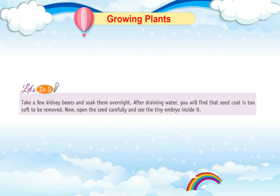Let's do it. Take a few kidney beans and soak them overnight. After draining the water, you will find that the seed coat is soft enough to be removed. Now open the seed carefully and see the tiny embryo inside it.